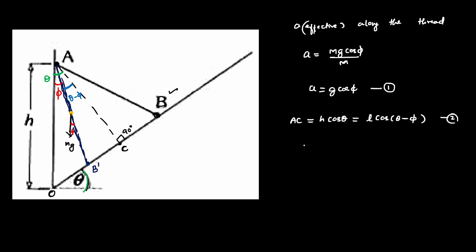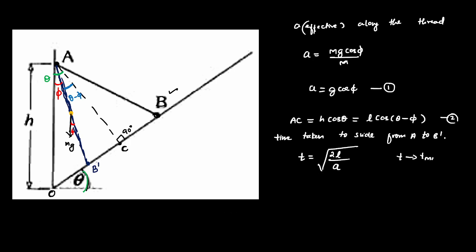The time taken to slide distance L under effective acceleration a is t = √(2L/a). This is the time taken to slide from A to B-dash. We need this time t to be minimum. The variable we control is phi — by changing phi, the acceleration changes via equation 1 and L changes via equation 2.